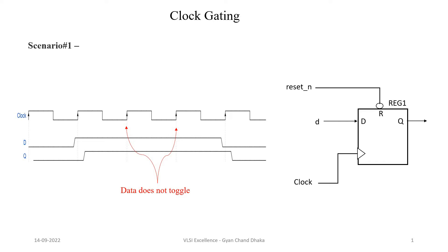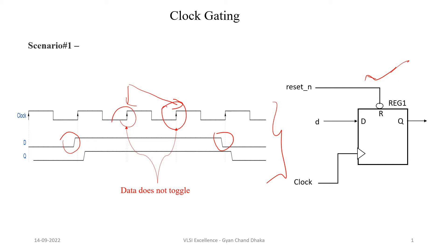Here you can see that we have a flip-flop circuit and the signal waveform for this flip-flop. If we carefully analyze these waveforms, we can see that the flip-flop input data is changing at two places. So if we do not have these two clock cycles present in our clock signal, or in other words, if we do not apply these two clock cycles to our flip-flop, our flip-flop output is not going to change. That means these two clock cycles are basically getting wasted with respect to flip-flop behavior.